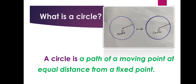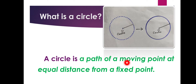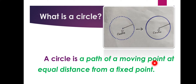What is a circle? A circle is a path of a moving point at equal distance from a fixed point. This is the definition for a circle. Let us see with an example. A circle is a path of a moving point, or a path traced by a moving point.